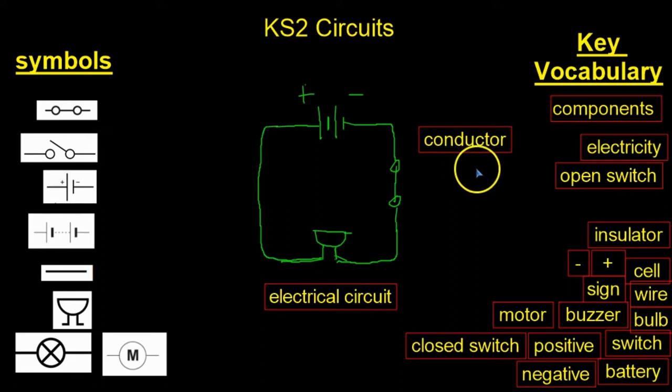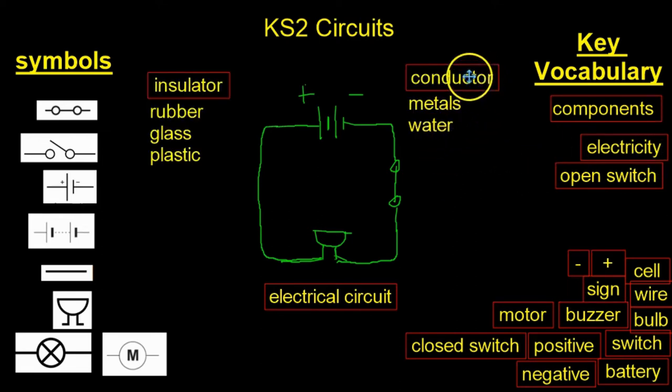Good conductors are metals and water. Things like gold, silver, aluminum, and seawater in particular are good conductors. Interestingly, seawater is a very good conductor.